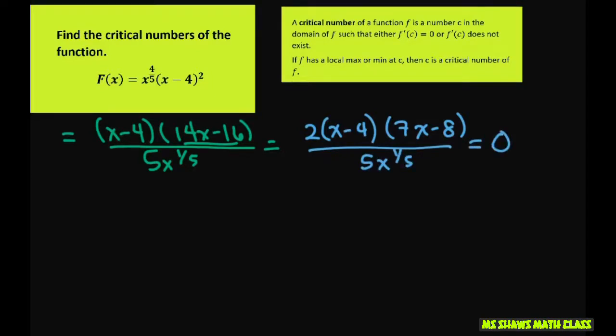You set each piece to zero. So you have x minus 4 equals zero, and 7x minus 8 equals zero. So your two critical values are x equal 4 when you solve for x, and you have x equals 8 sevenths.